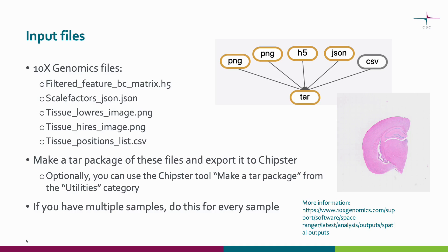The PNG files contain downsampled versions of the original full resolution image. And finally, the CSV file contains a table with rows that correspond to spots. As mentioned, these files need to be in a tar package, which you can also make in CHIP-STIR using the tool make a tar package.